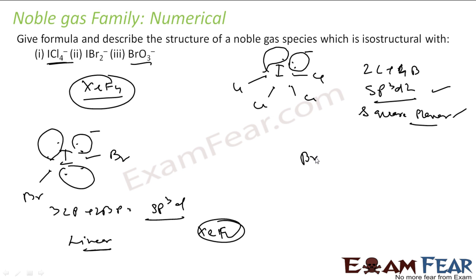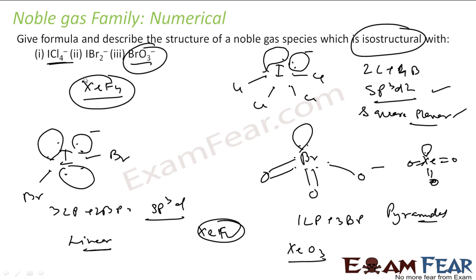The next is BrO3-. Bromine, 1, 2, 3, 4, 5, 6, 7 and O-. 1 Oxygen, 2 Oxygen, 1 Oxygen with a negative charge we put here. And this is a lone pair. So 1 lone pair plus 3 bond pair. This is pyramidal. So pyramidal is XeO3. We have seen that. XeO3 is pyramidal. So with our knowledge, we can just tell that this is XeO3, which is having the same structure. Isostructural means same structure.